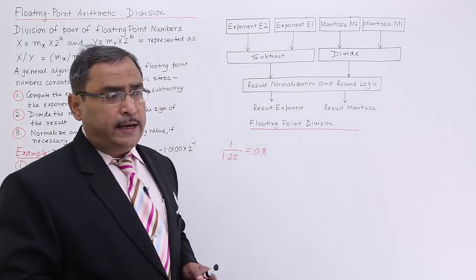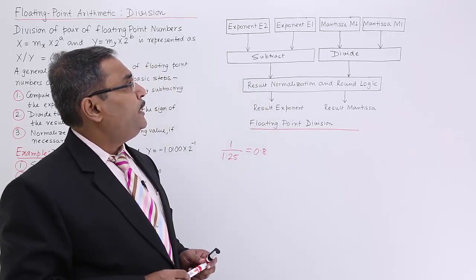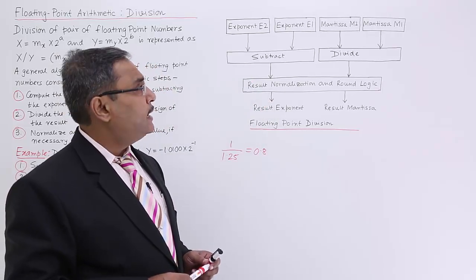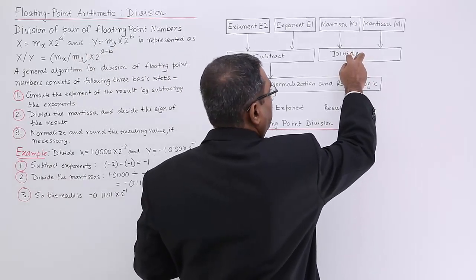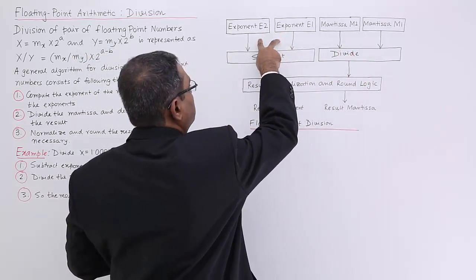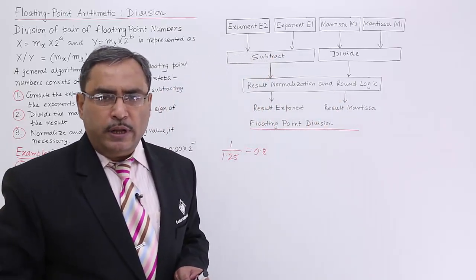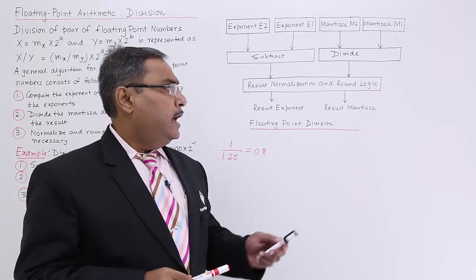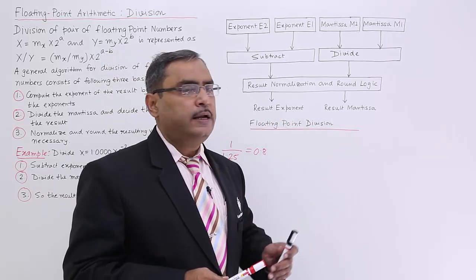So now this is the schematic diagram for the floating point division. So exponent E2, exponent E1, mantissa M2, mantissa M1. So here the mantissas are getting divided and the exponents are getting subtracted. Now we require the result rounding, normalization and rotation, and then I will be getting the resultant exponent and the resultant mantissa.